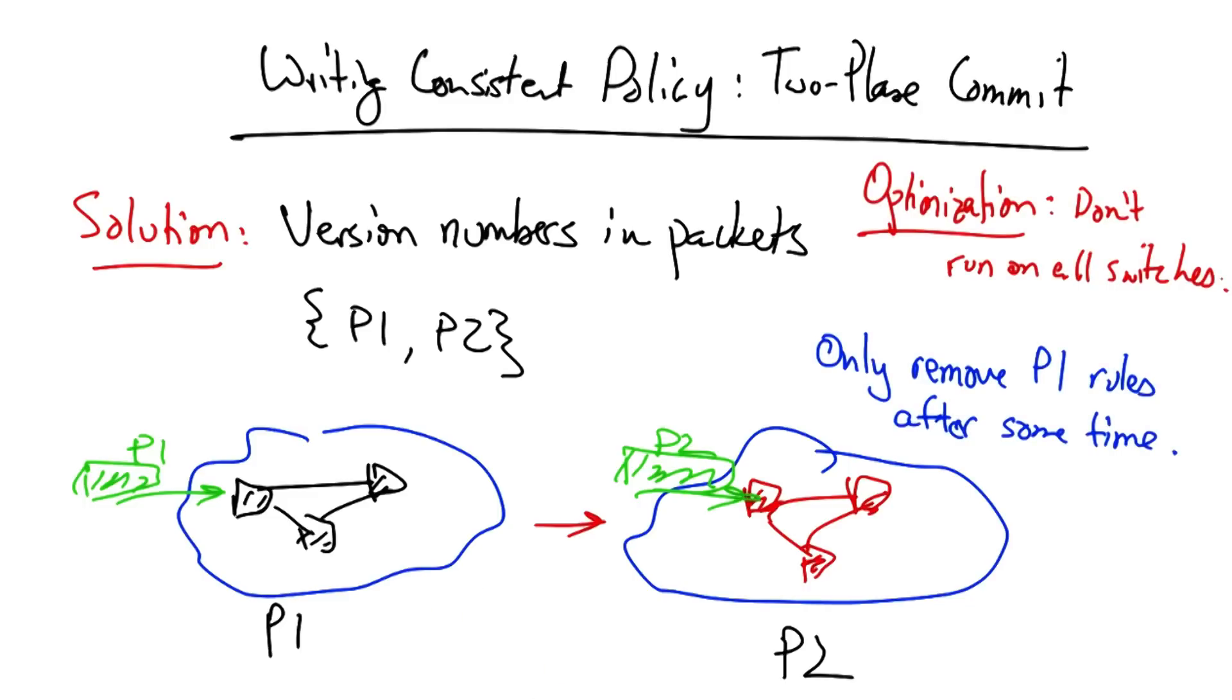Now the naive version of two-phase commit requires doing this on all switches at once, which essentially doubles the rule space requirements since we have to store the rules for both P1 and P2. We can limit the scope of the two-phase commit by only applying this mechanism on switches that involve the affected portions of the traffic or the affected portions of the topology.